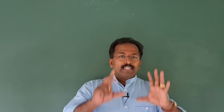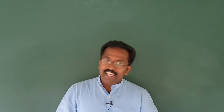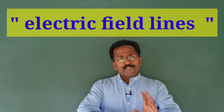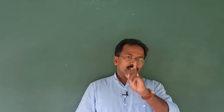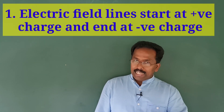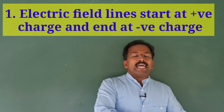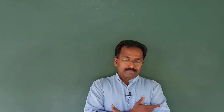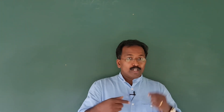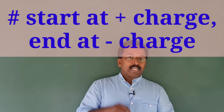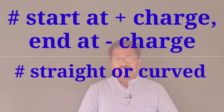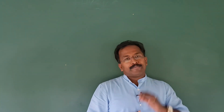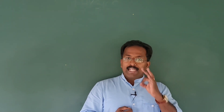According to Faraday, electric field contains electric field lines, and he has certain rules for drawing them. Roughly there are 4 rules. Rule number 1: an electric field line must start at the positive charge and end at the negative charge. The second rule is it can be a straight line or a curved line. We will draw certain actual lines so you can understand it better.